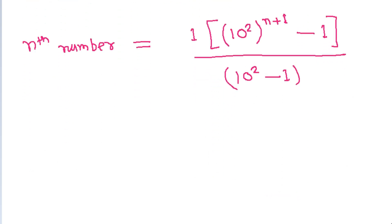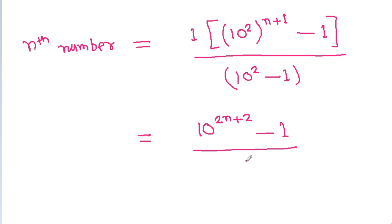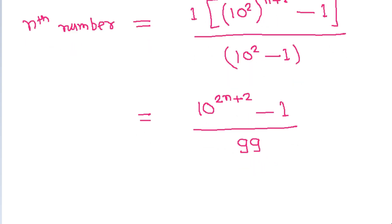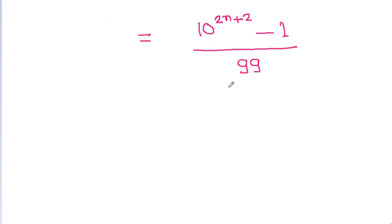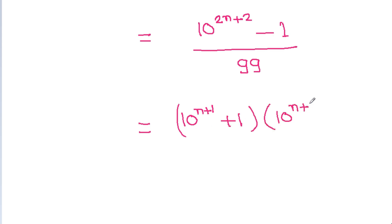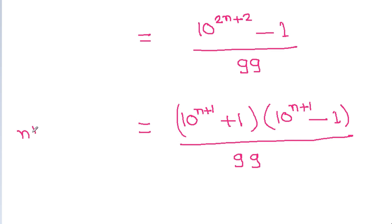We get 10 to the power 2n+2 minus 1, divided by 99. Using the identity a squared minus b squared equals (a plus b)(a minus b), we get (10 to the power n+1 plus 1) times (10 to the power n+1 minus 1), divided by 99.